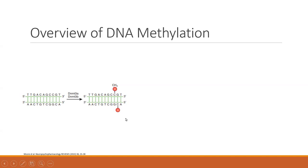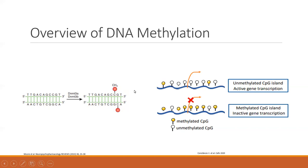First, a brief overview of DNA methylation. DNA methylation is a chemical modification of DNA that affects gene expression without altering the underlying sequence — specifically, the addition of a methyl group at a cytosine followed by a guanine, which I refer to as a CpG dinucleotide. As a general rule, promoter regions devoid of DNA methylation allow for gene expression, whereas when gene promoters are methylated, this leads to gene repression or inactive gene transcription.